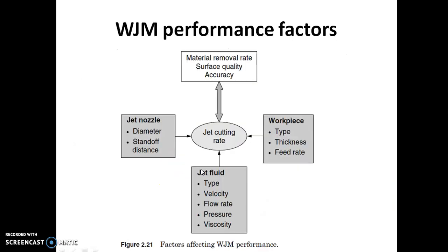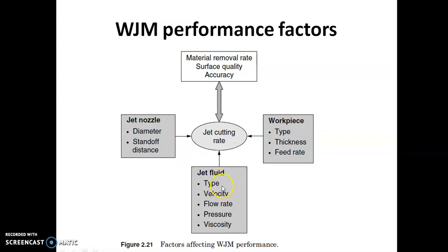These are the performance factors for both water jet machining and abrasive water jet machining. The jet cutting rate depends upon metal removal rate, surface quality, and accuracy. Other factors include workpiece type, thickness, feed rate, jet nozzle diameter, and standoff distance — which is the distance between the nozzle exit and the workpiece. Jet fluid factors include velocity, type of jet, flow rate, pressure, and viscosity, and these influence the performance of the water jet machine.